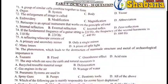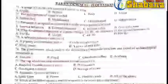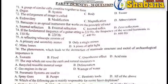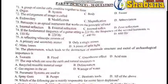Question number one: A group of similar cells combine together to form tissue. The correct answer is D, tissue. The cell is found in tissues. For example, blood — red, white, liquid. The answer is D.